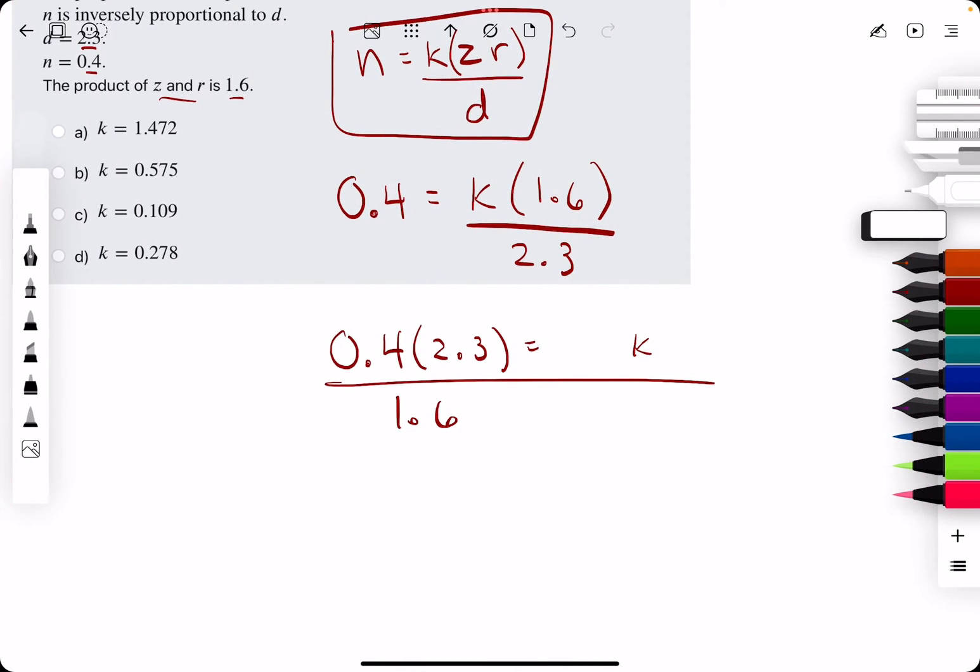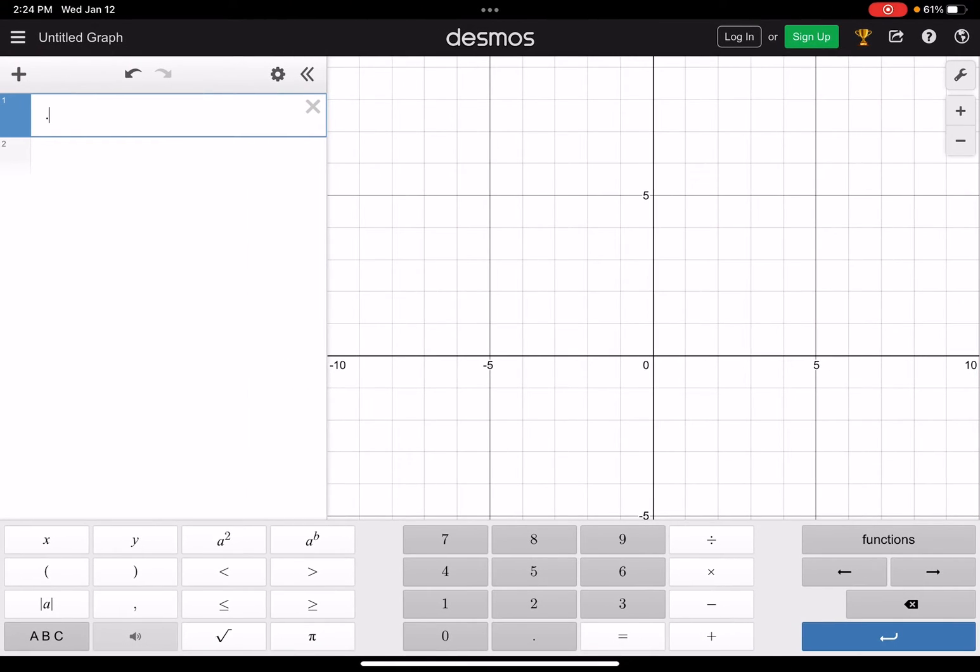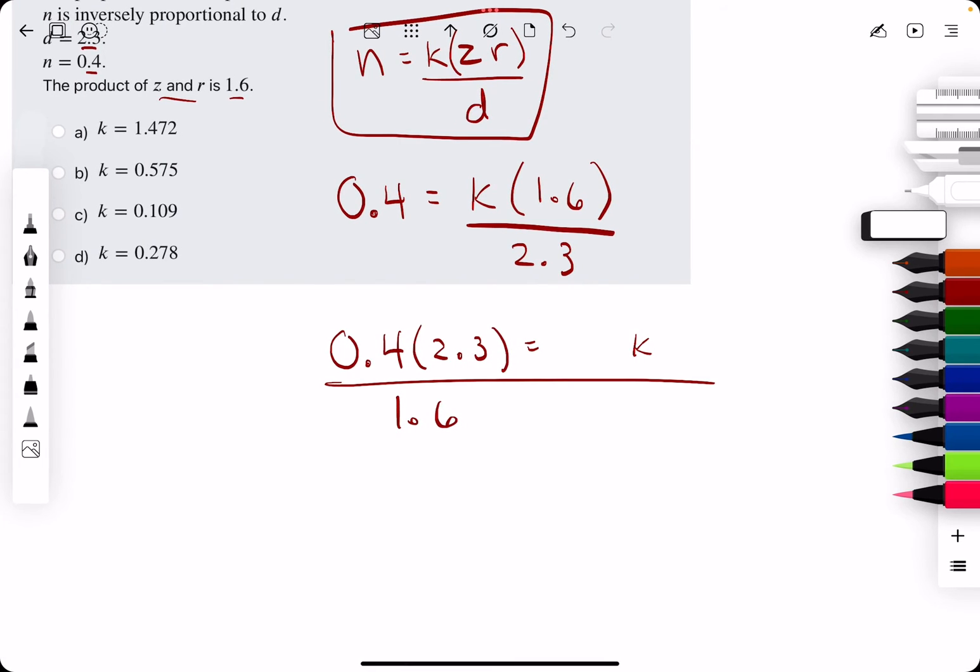All right. So 0.4 times 2.3, all divided by 1.6, and that should work regardless. We get 0.575.